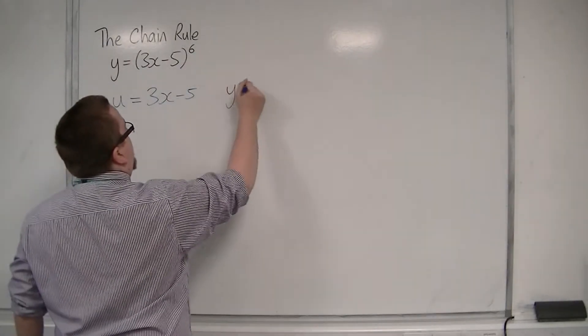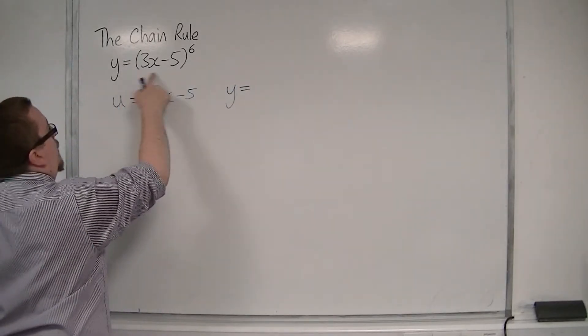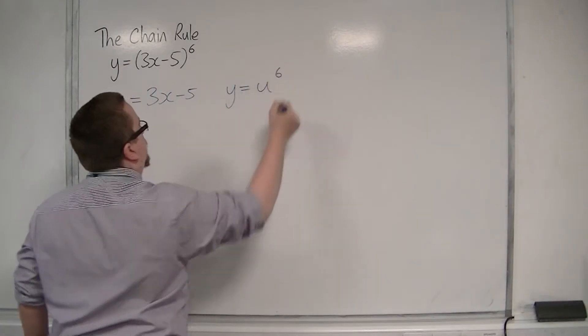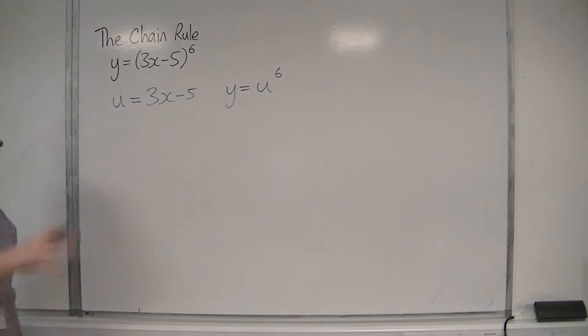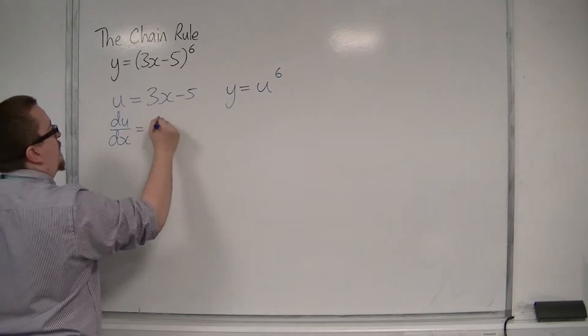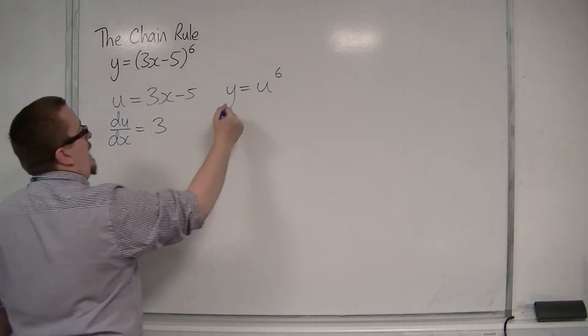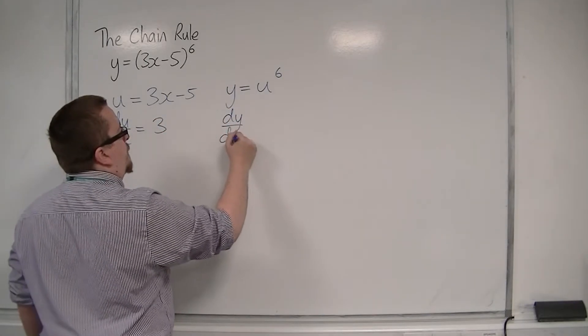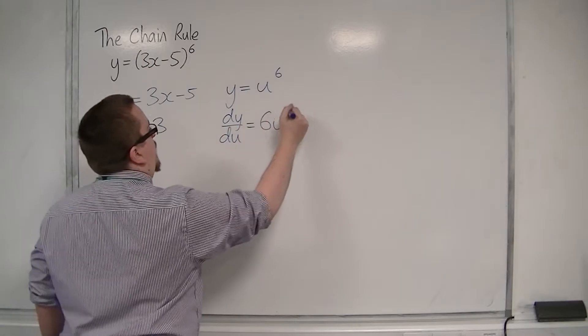So that y is equal to u to the power of 6. We then look to find du by dx, which is going to be 3, and dy by du, which is going to be 6u to the 5.